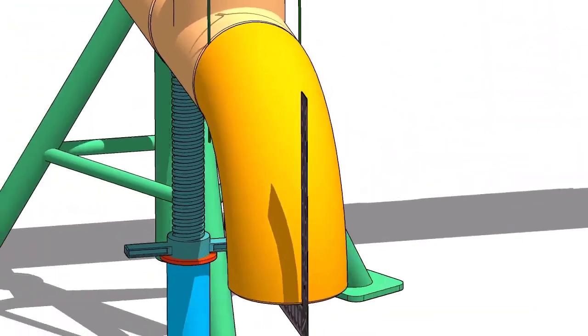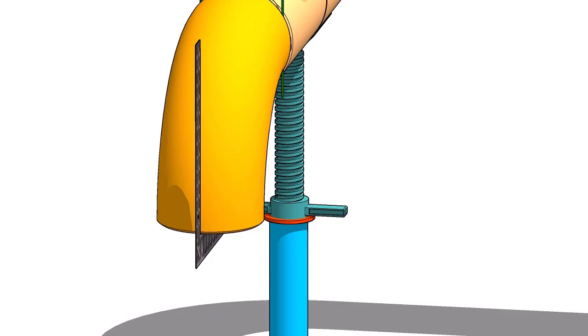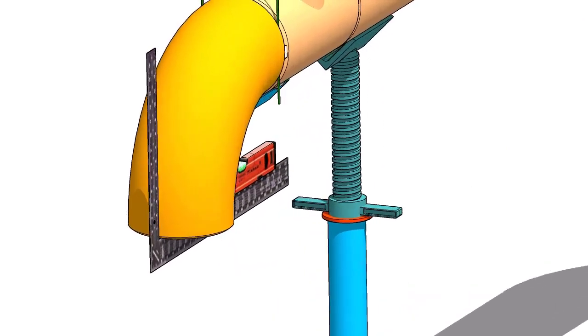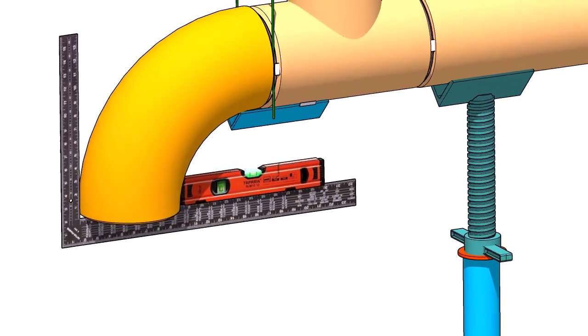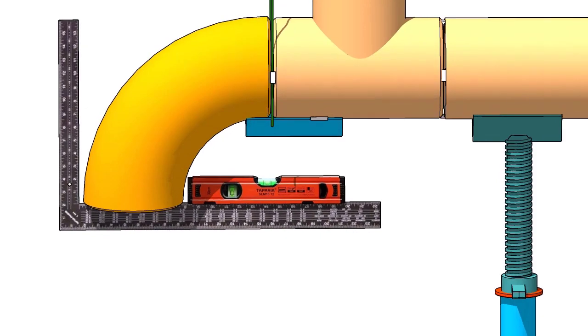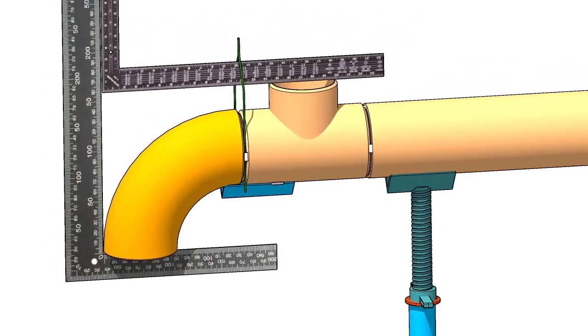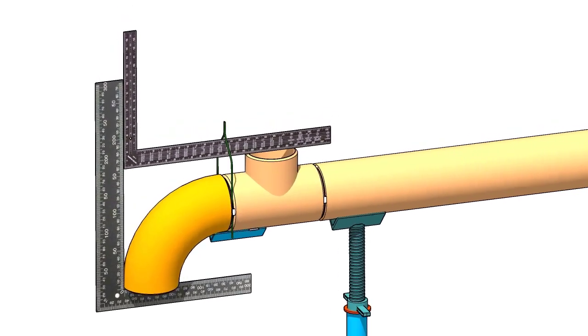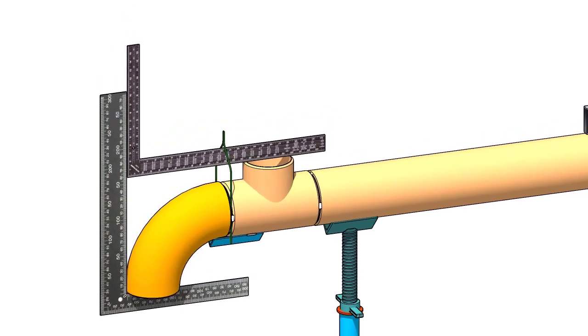Rotate the right angle and the spirit level longitudinal and maintain the elbow face level. Check the branch face and the elbow face is right angle to each other.